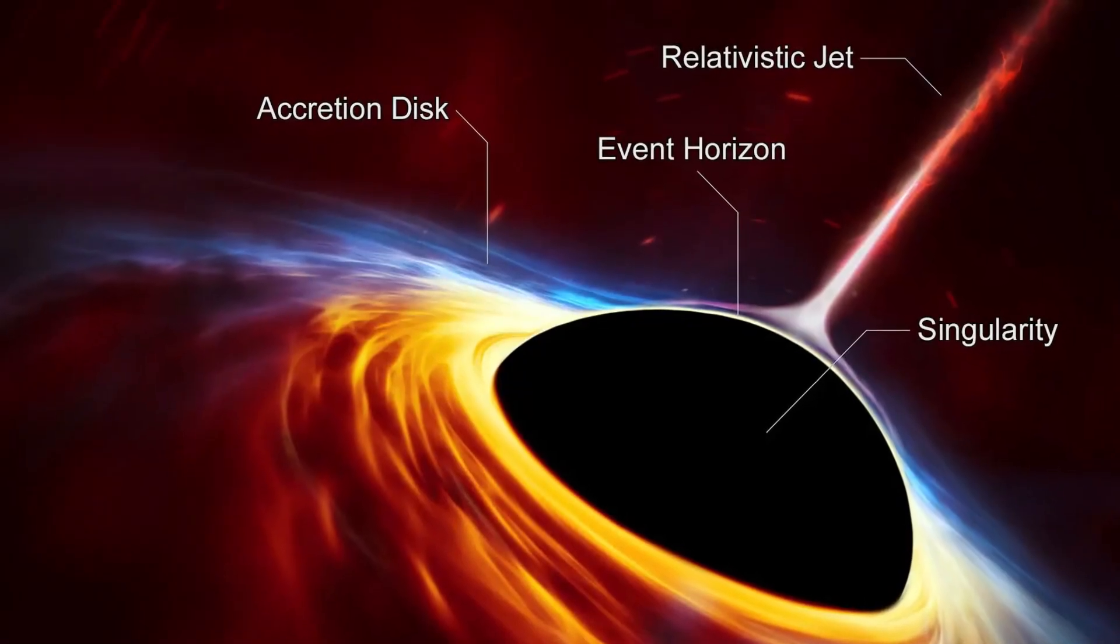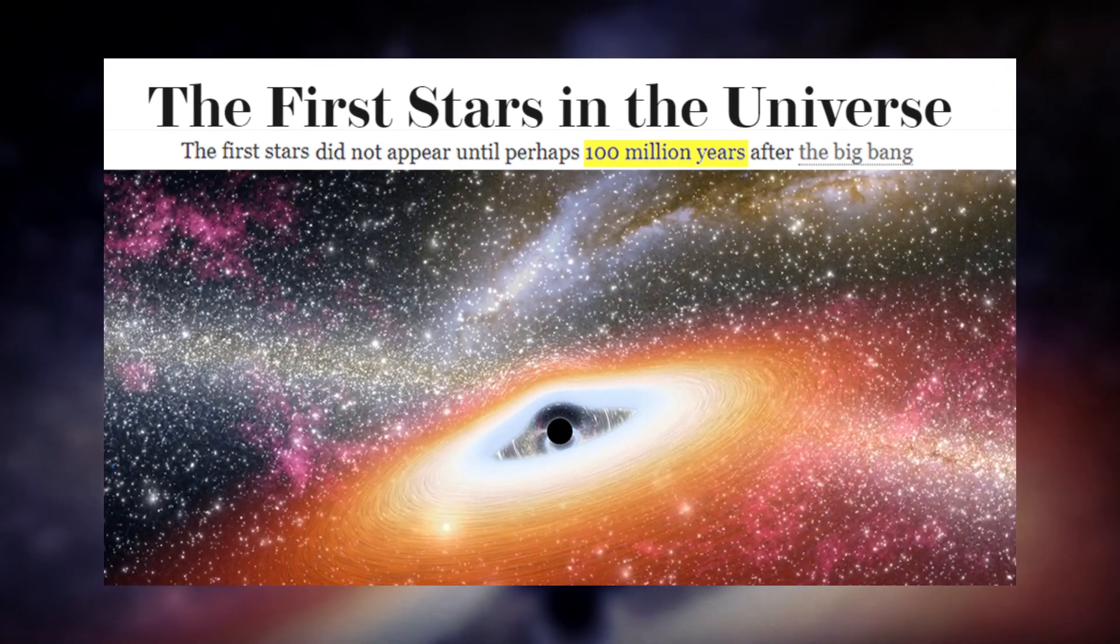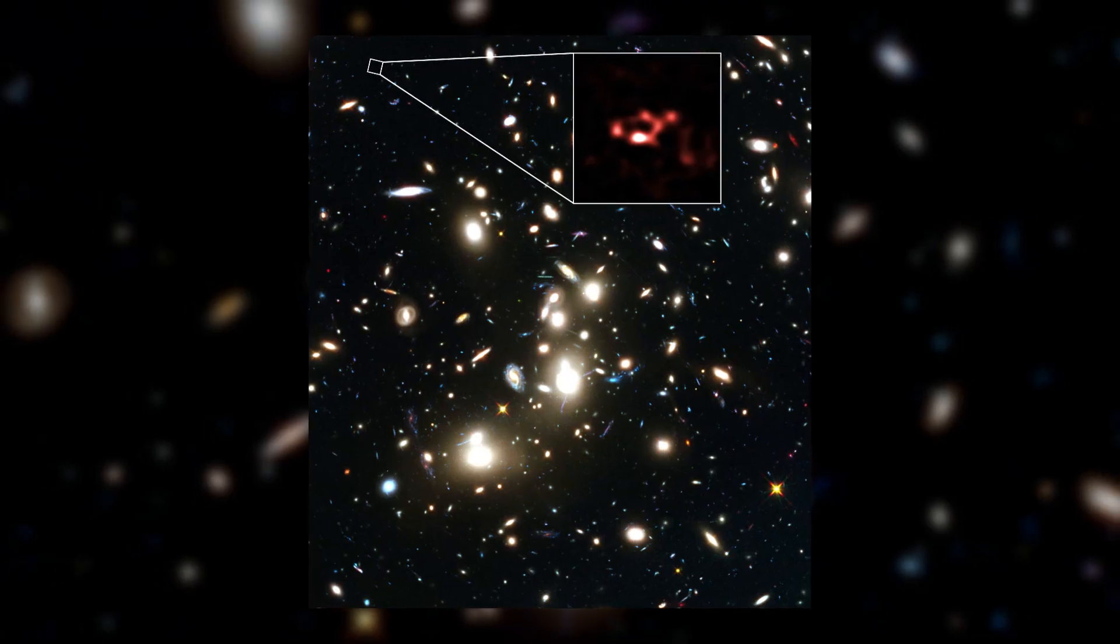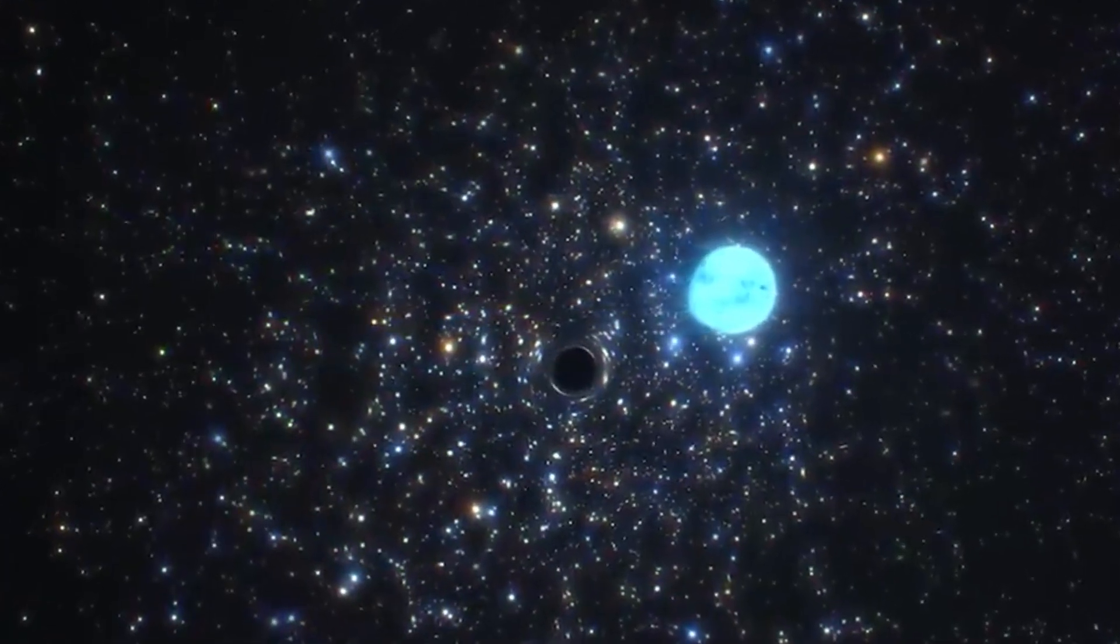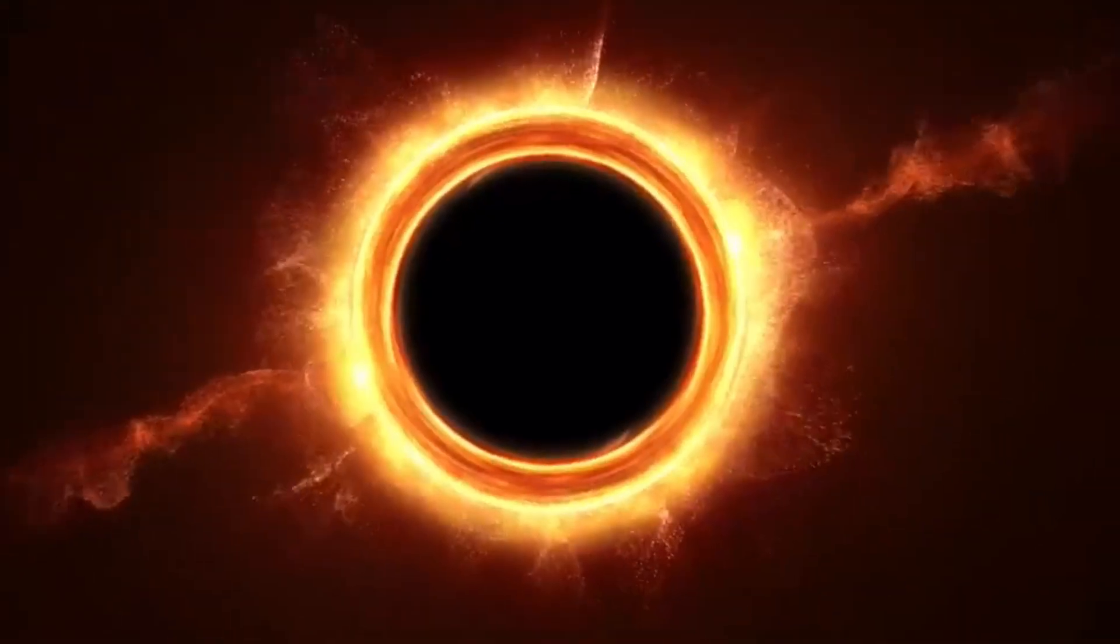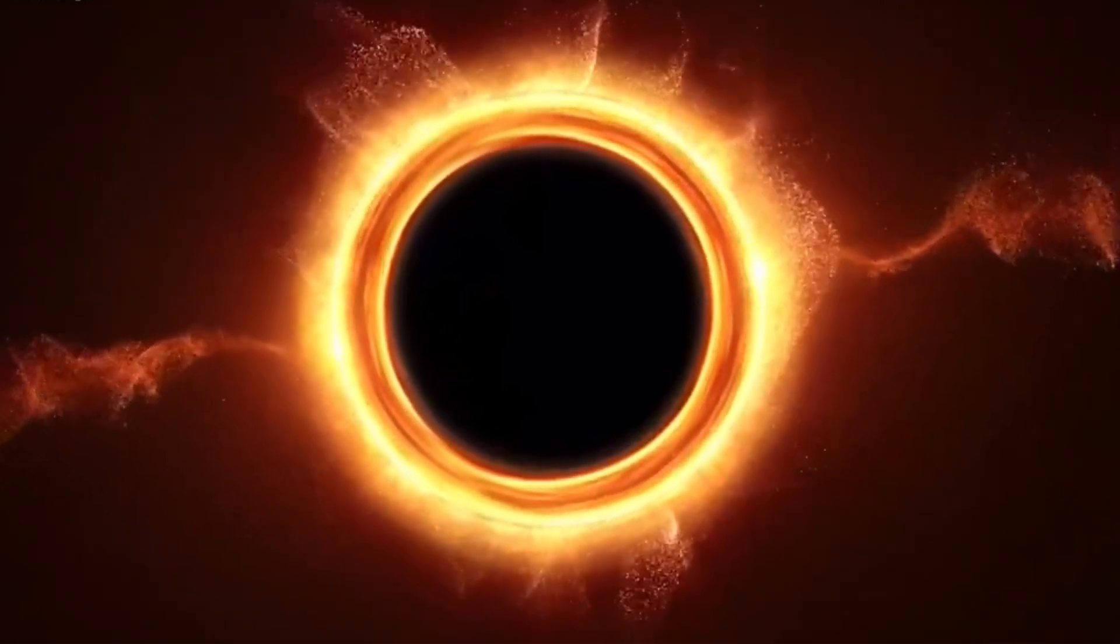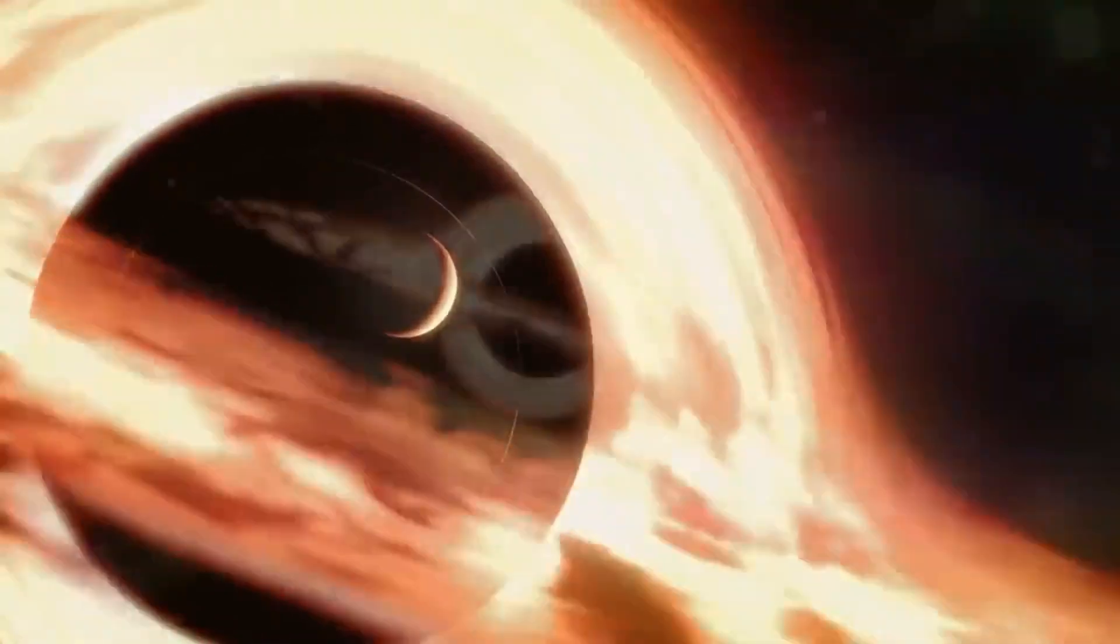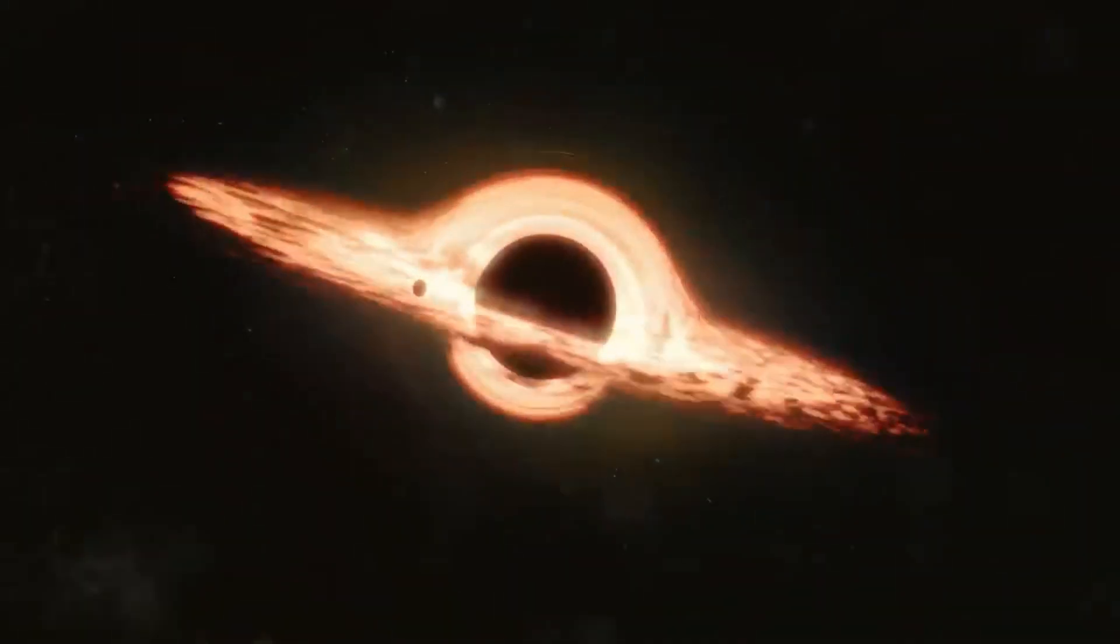According to our current theories, the first black holes should have formed about 100 million years after the Big Bang when the first stars and galaxies started to form. These black holes were probably very small, only a few times the mass of the sun, but over time they grew bigger by swallowing more matter and merging with other black holes. Eventually, some of them became supermassive, with masses of millions or billions of suns.